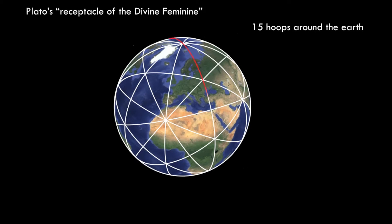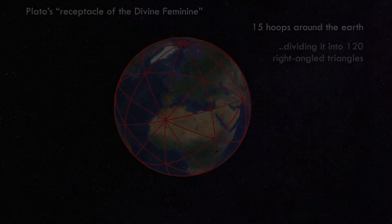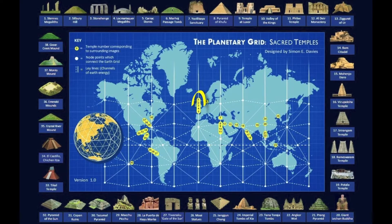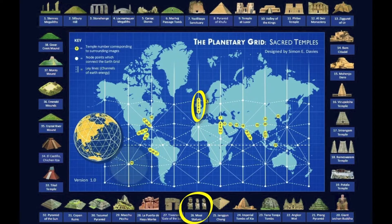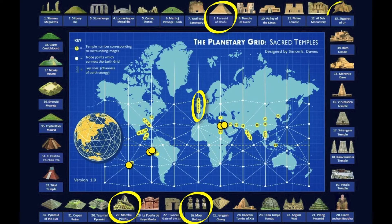We'll see how these three-dimensional forms are contained within the fifteen bands that encircle the globe, the receptacle of the divine feminine celebrated in ancient cultures globally. And how along these lines, either by coincidence or grand design, some of the world's most sacred sites can be found. The most celebrated of these great circle lines, the Allison Line, joins sites such as Easter Island, Machu Picchu, the pyramids, Petra, Mohenjo-daro, and Angkor Wat.